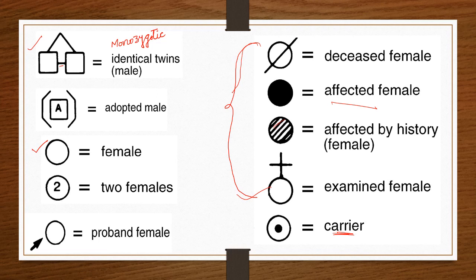In some genetic disorders, the female acts as a carrier. Males are not carriers — they may be either normal or affected.